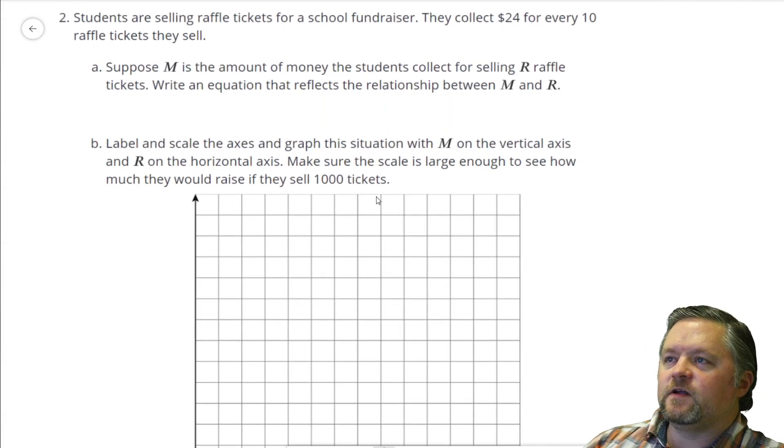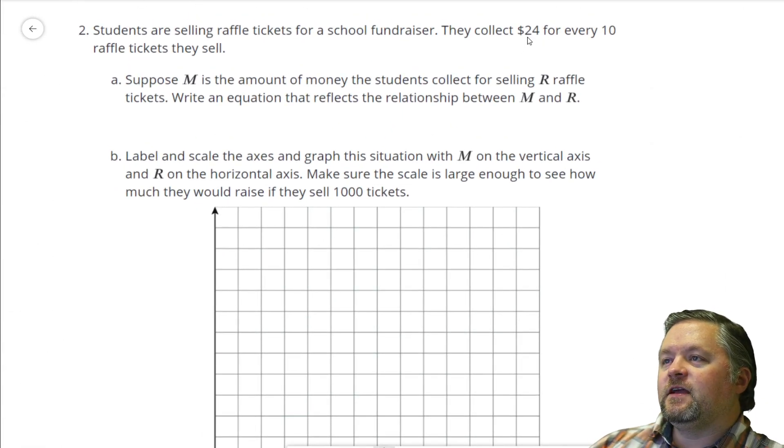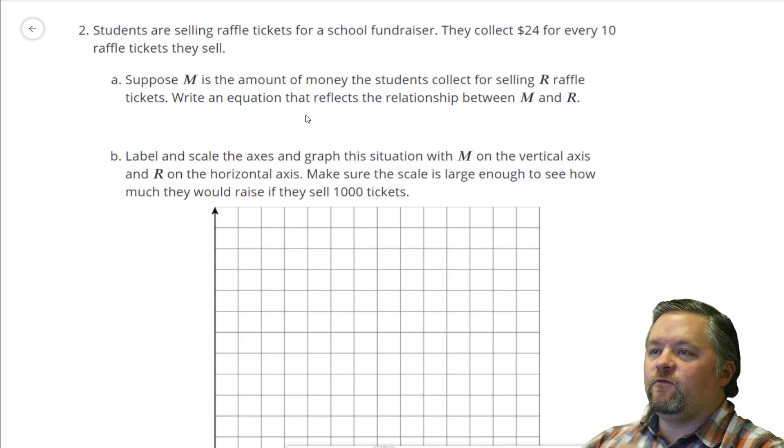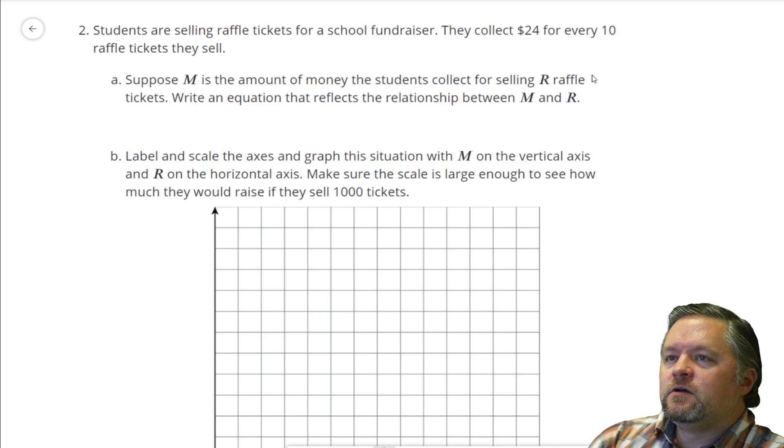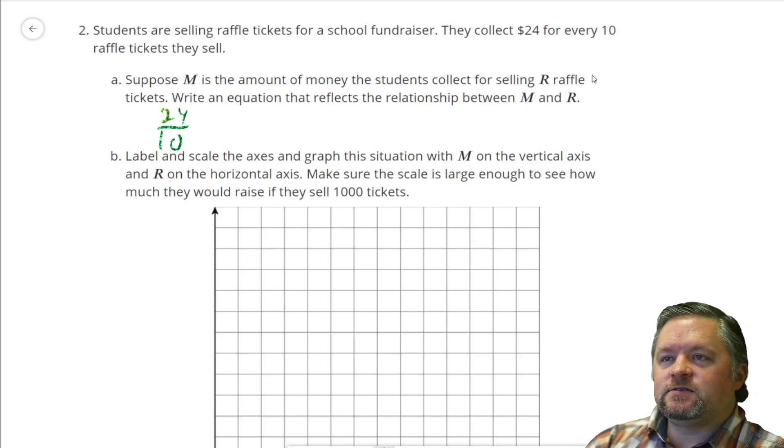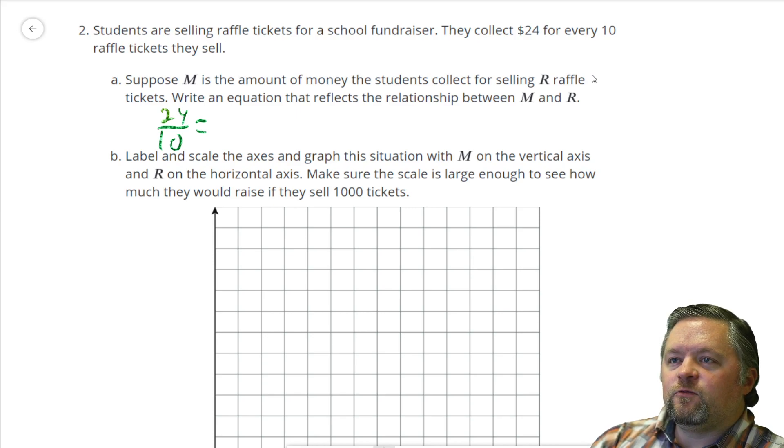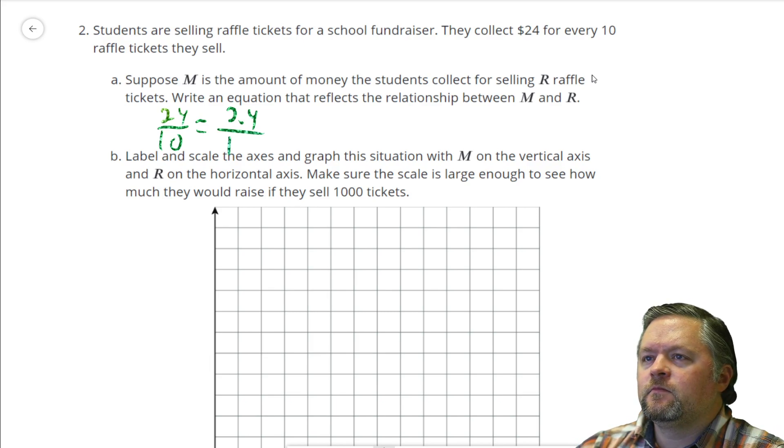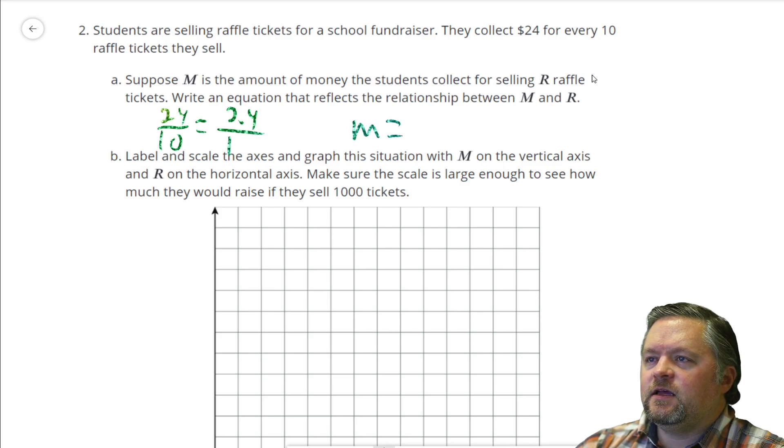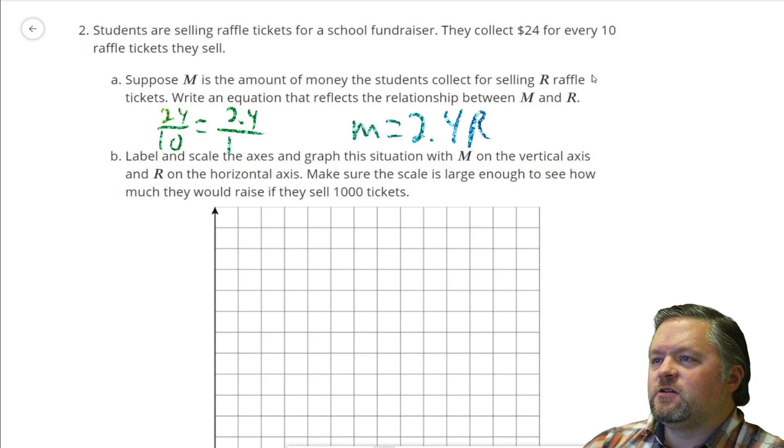Students are selling raffle tickets for school fundraiser. Yay, raffle tickets. They collect $24 for every 10 tickets they sell. Suppose m is the amount of money they collect for selling r raffle tickets. Write an equation that reflects the relationship between m and r. So, if we get $24 for every 10 raffle tickets, let's find our unit rate, our slope, which would be 2.4 over 1. So, our money is 2.4 times the number of raffle tickets. So, we get $2.40 per raffle ticket.